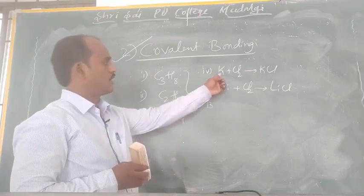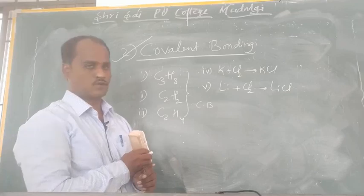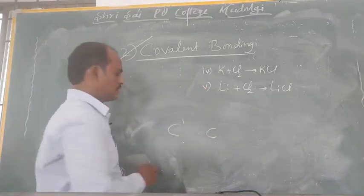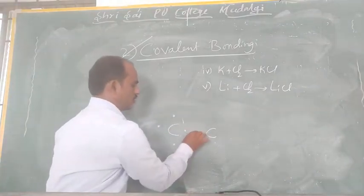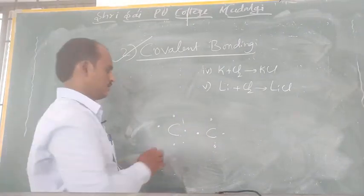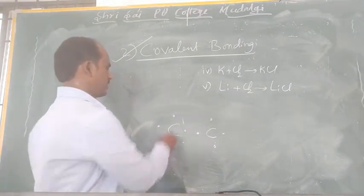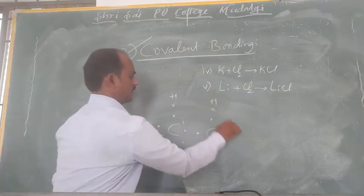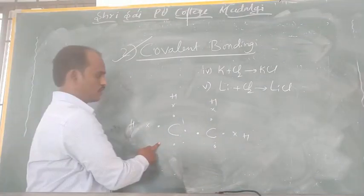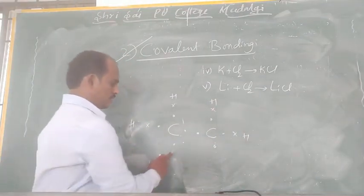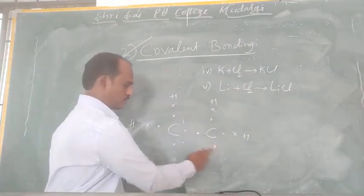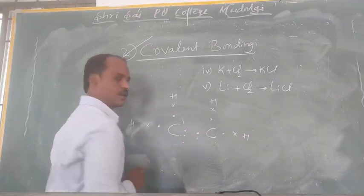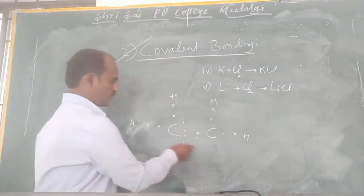Potassium chloride and lithium chloride exhibit ionic bonding. Now, taking C₂H₄ as an example: each carbon has four valence electrons. There are four hydrogen atoms — two hydrogen atoms bond to one carbon and two to the other carbon. Each carbon has one free electron remaining, so those free electrons form a bond between the two carbons, making a double bond.